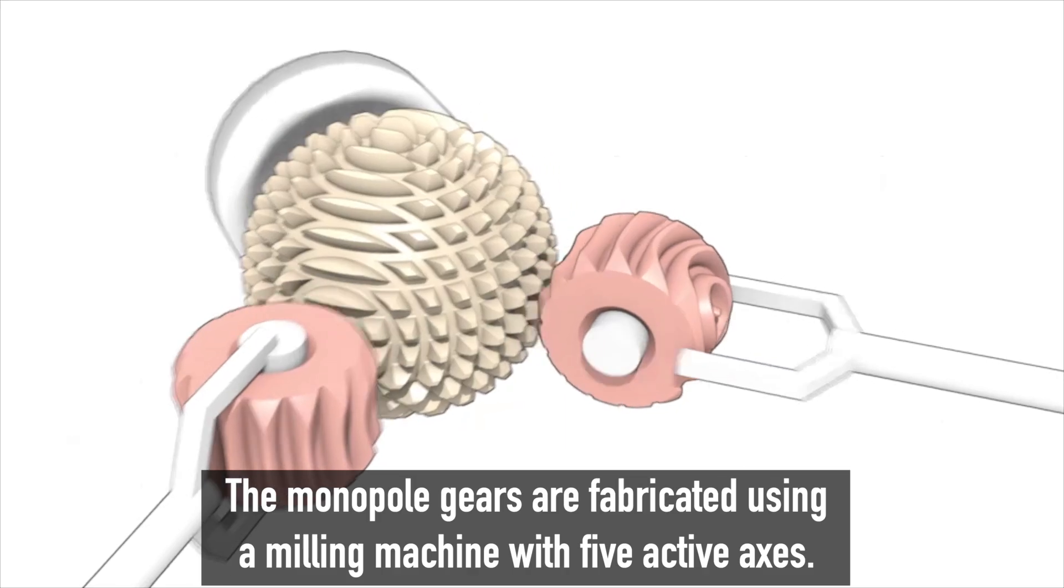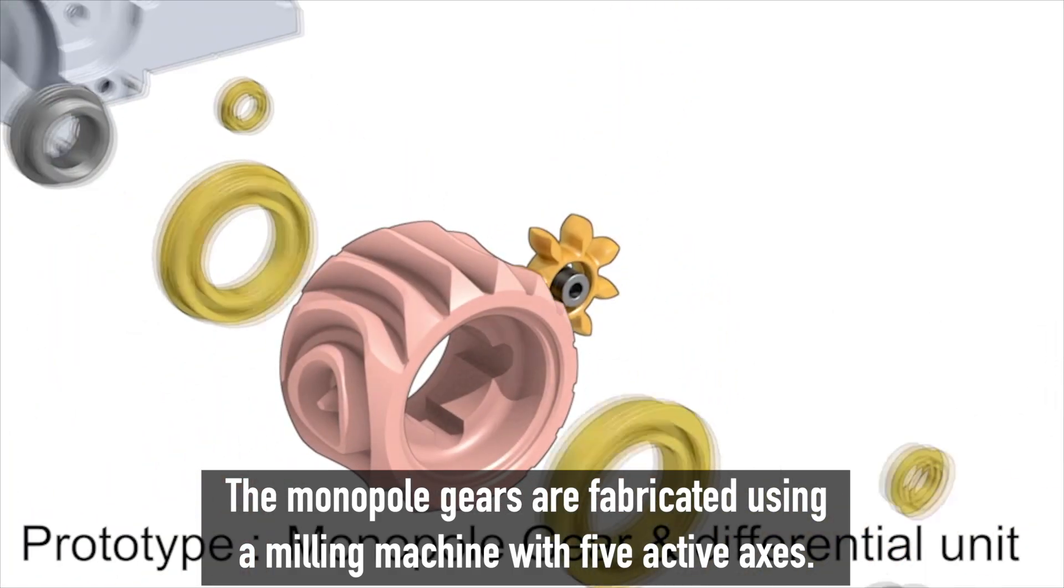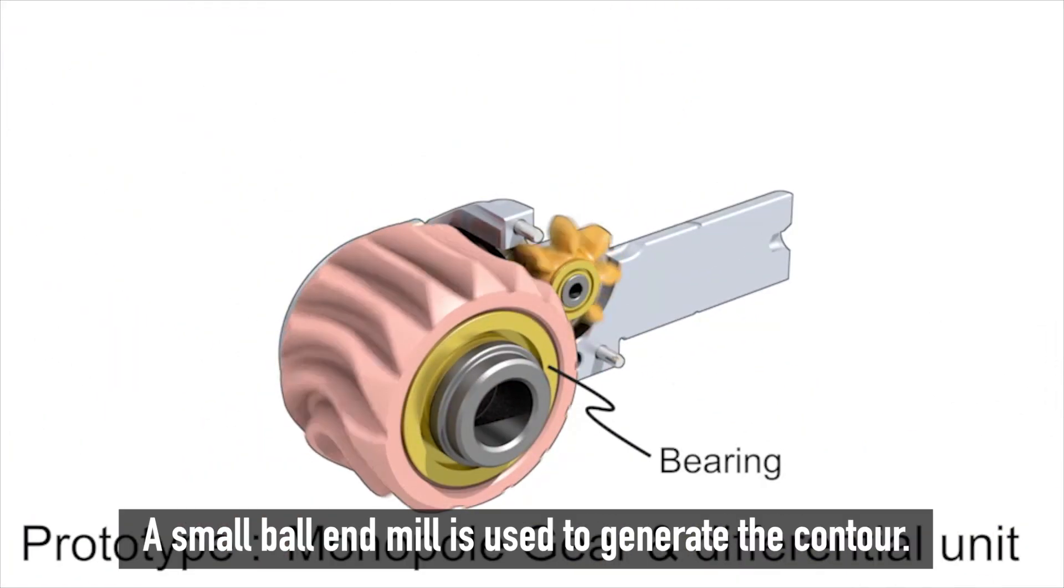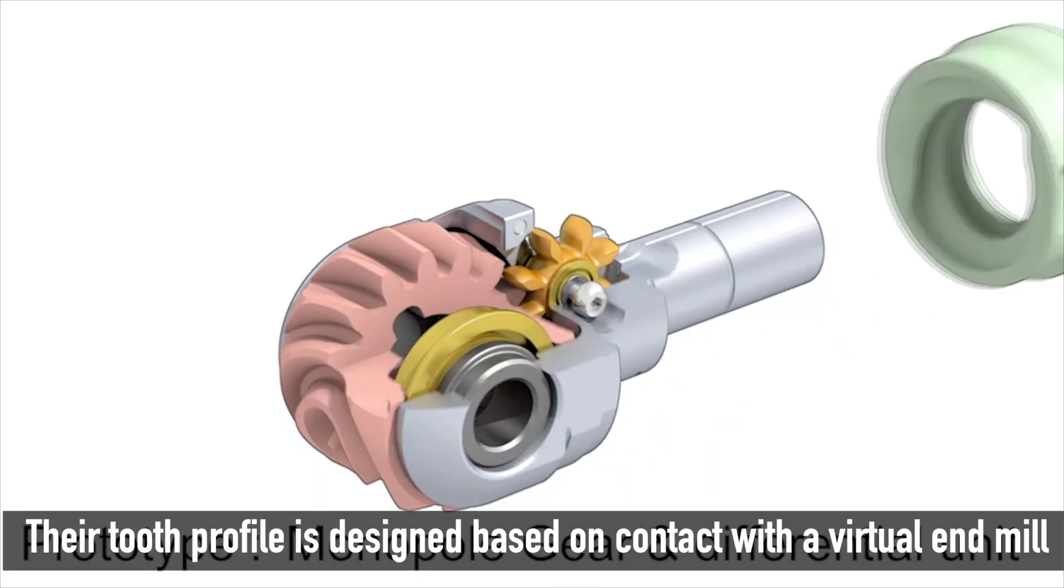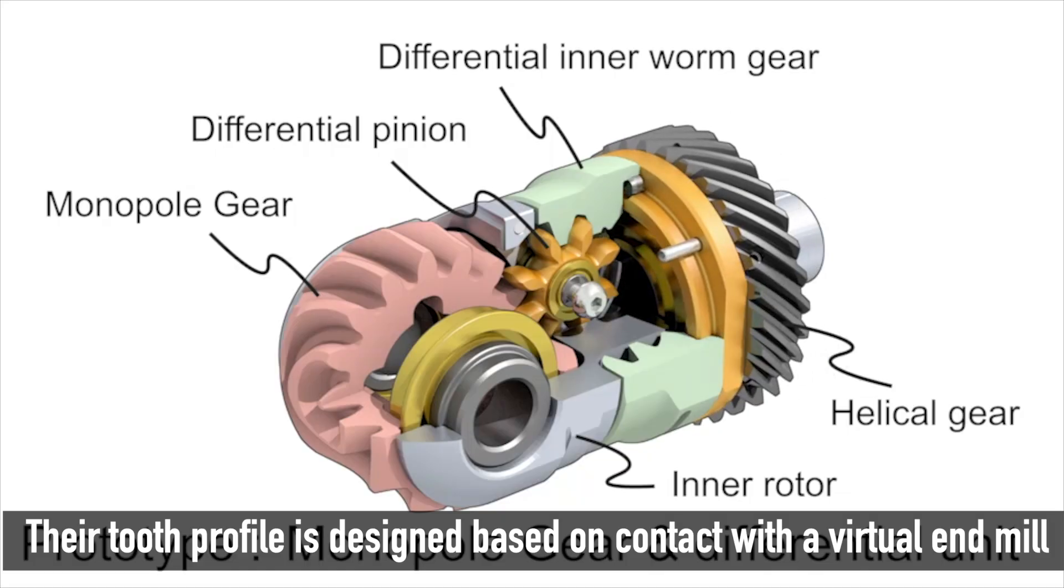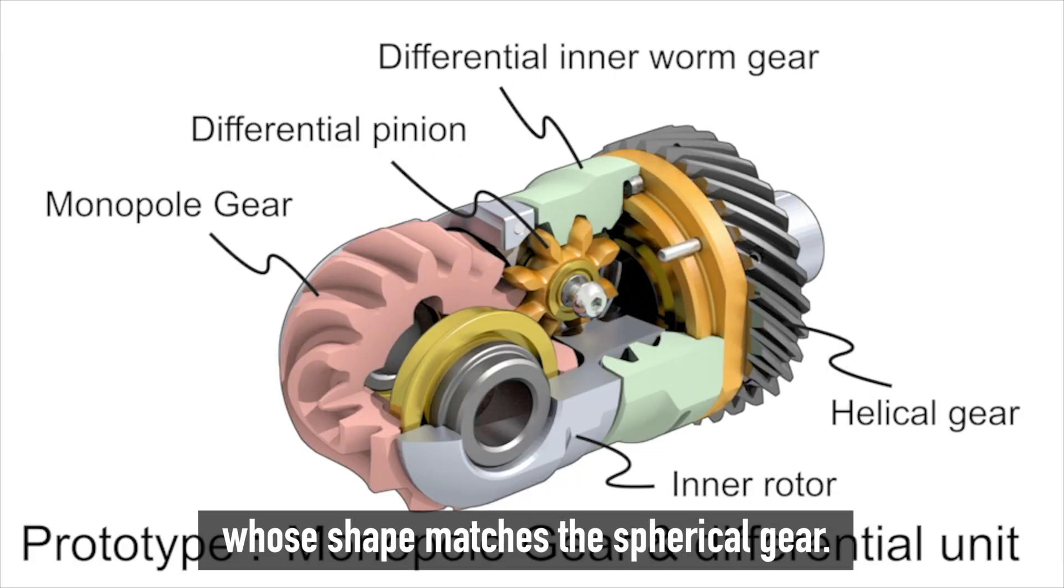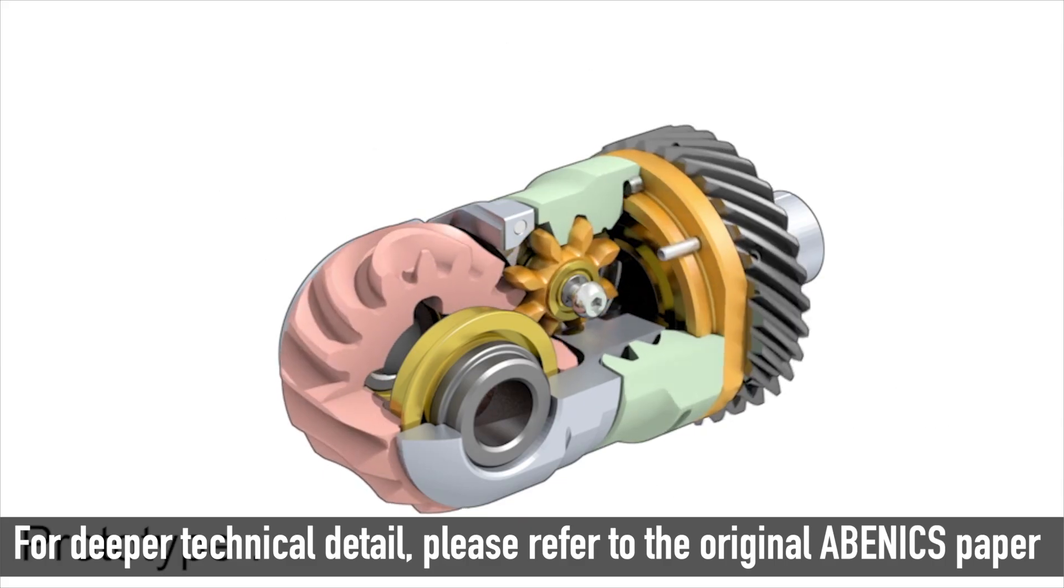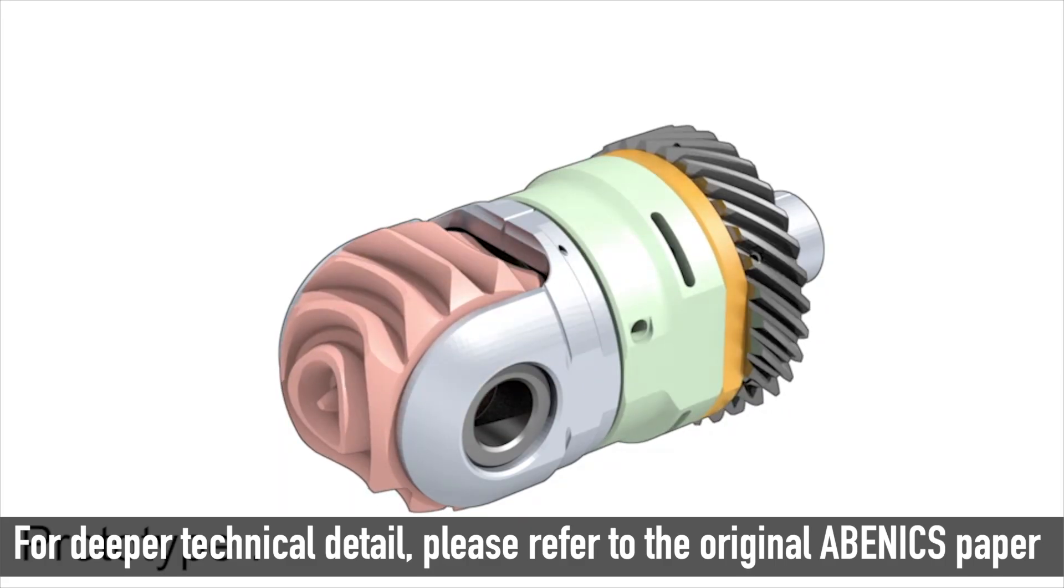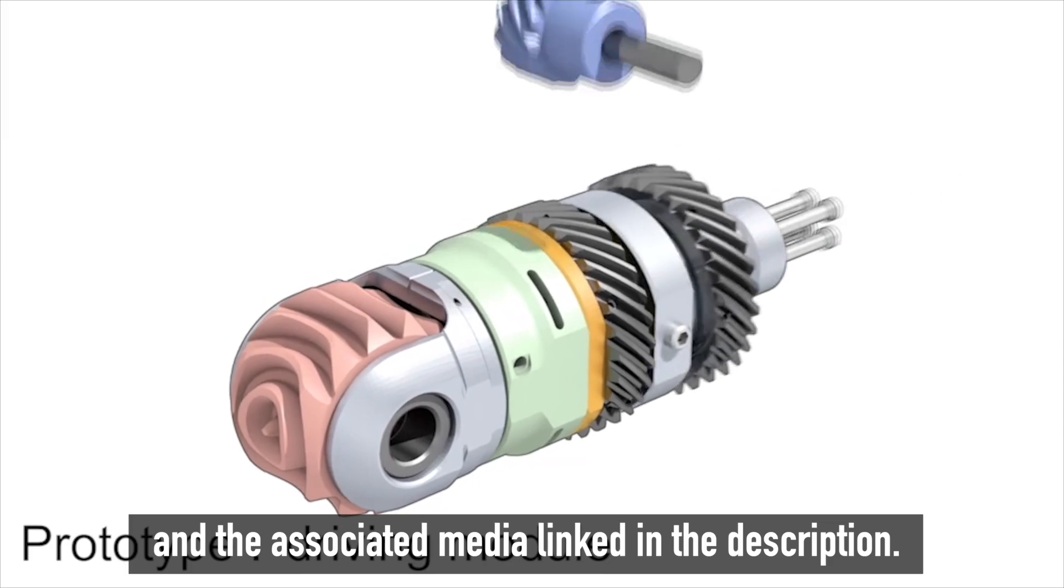How did you create the monopole gears? The monopole gears are fabricated using a milling machine with five active axes. A small ball end mill is used to generate the contour. Their tooth profile is designed based on contact with a virtual end mill, whose shape matches the spherical gear. For deeper technical detail, please refer to the original AVENIX paper and the associated media linked in the description.